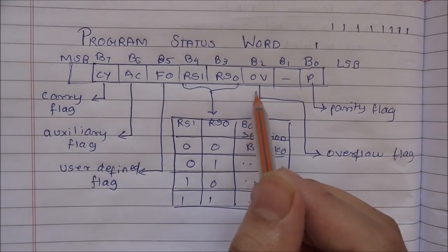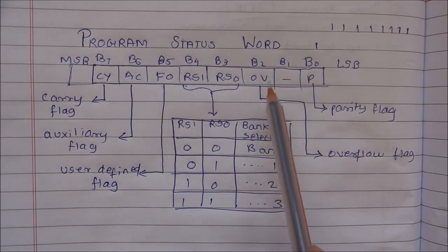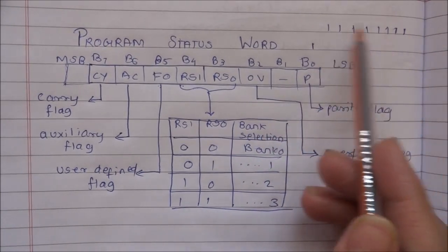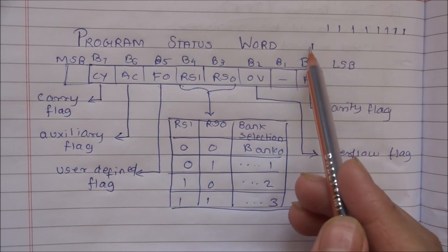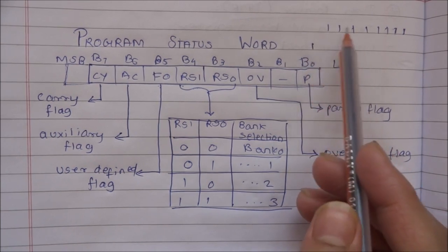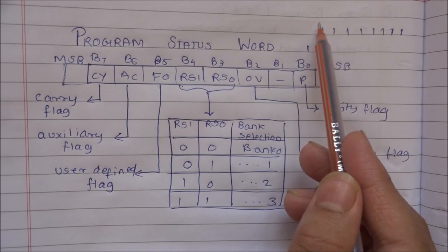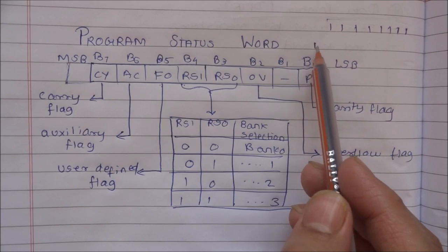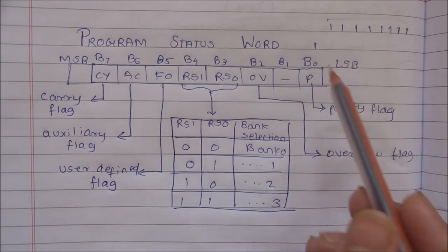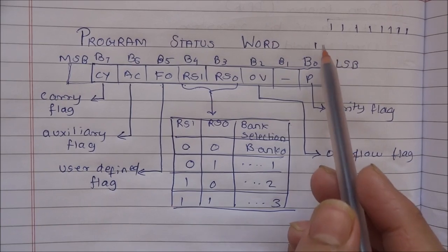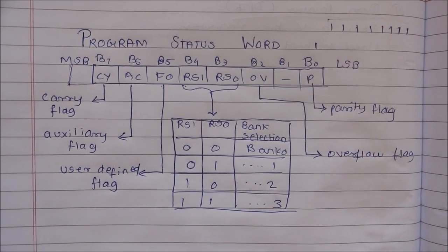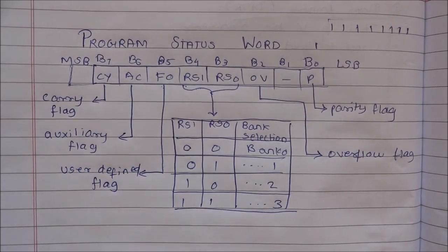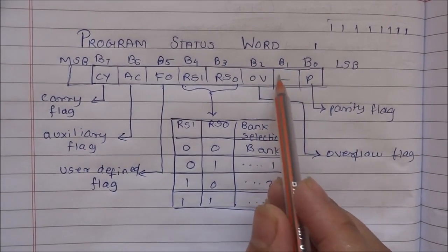The overflow flag will be set if an extra bit is generated beyond the 8 bits — that is, a ninth bit is generated. The size of the data is 8 bits, but when an extra bit is generated, this is called overflow. The value of this ninth bit will be stored in the overflow flag to handle the extra bit.